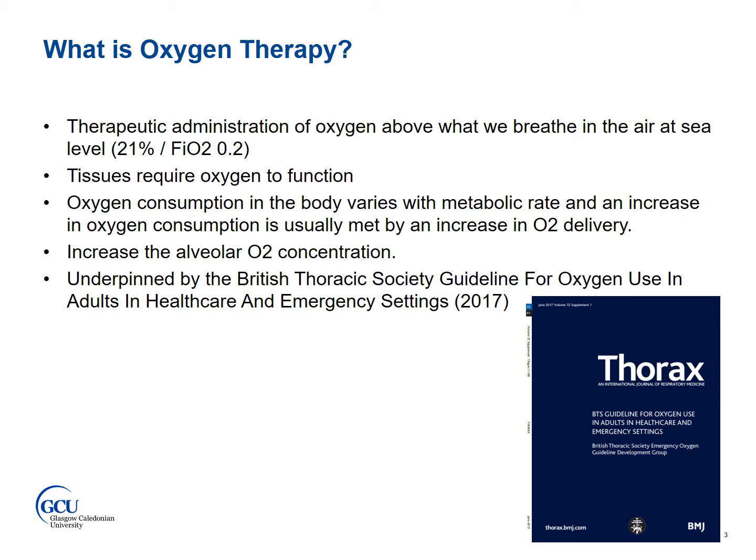Your tissues require oxygen to function, and there is a balance between supply and demand. Oxygen consumption in the body varies with metabolic rate, and an increase in oxygen consumption is usually met by an increase in oxygen delivery. Your body normally does this by increasing your cardiac output, increasing your minute ventilation — calculated by your tidal volume and your respiratory rate, so how deep and fast you're breathing — and your body can also increase the rate at which oxygen is extracted from your tissues.